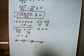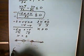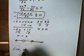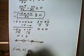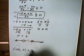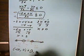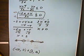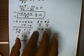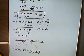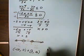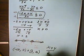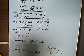Therefore, the solution will be negative infinity to 0, open, union closed at 2 to positive infinity with a parenthesis. And that will be the solution of the original inequality: x plus 4 all over 3x is less than or equal to 1.